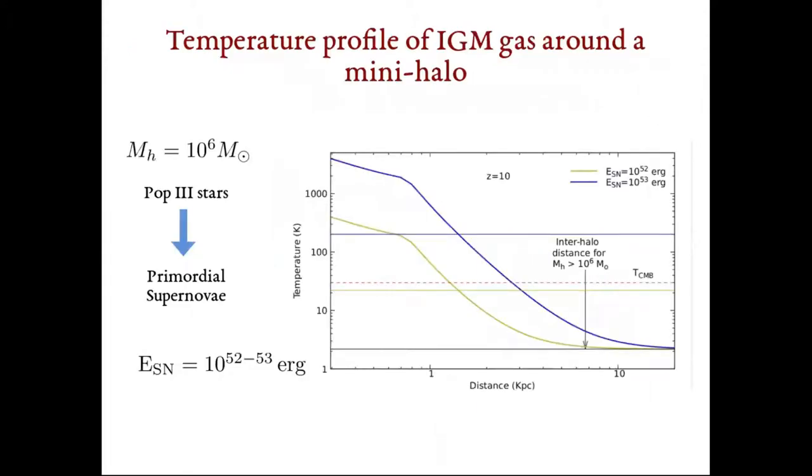Here I present a particular case of Population III supernova explosion in a high-redshift mini-halo. These halos have mass in the range of 10 to the power 6 to 7 solar mass. It is believed that the first stars, or the Population III stars, appeared in such mini-halos around redshift of 20, and due to their massive size, they exploded in powerful supernova explosions within a few million years. The energy emitted in such a supernova explosion is in the range of 10 to the power 52 to 53 erg.